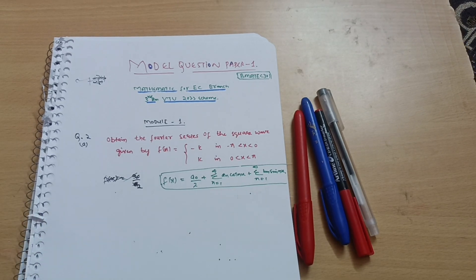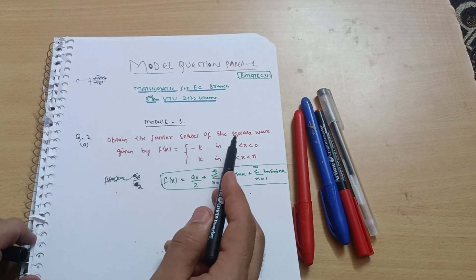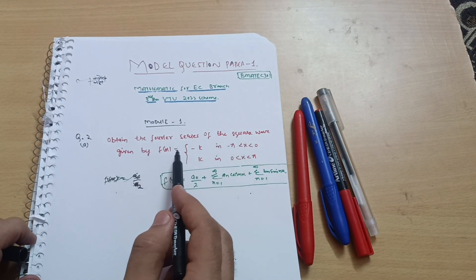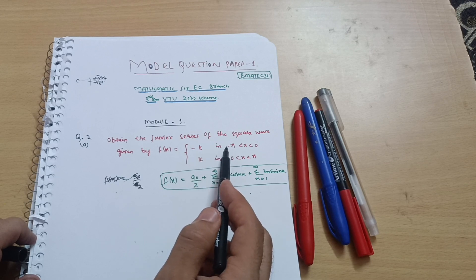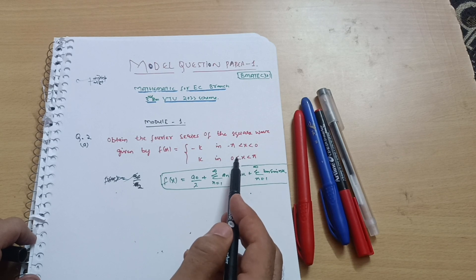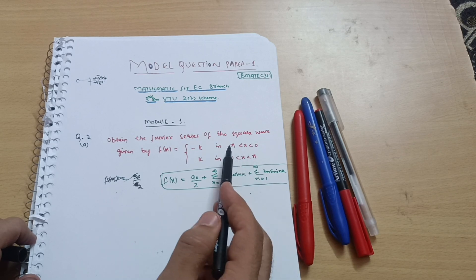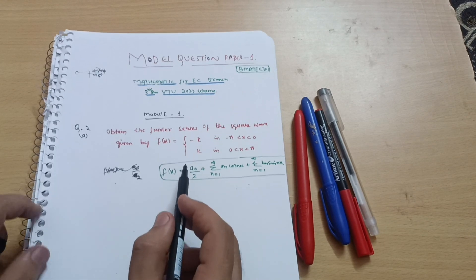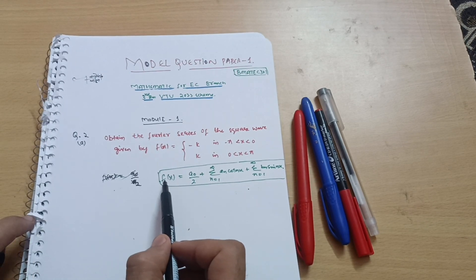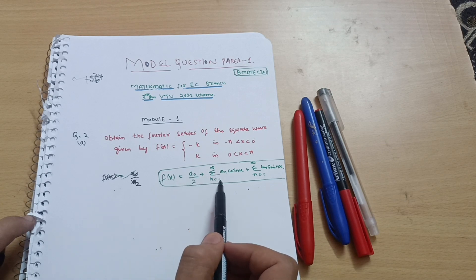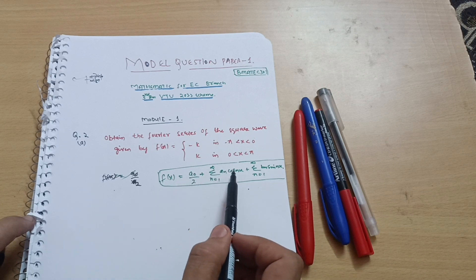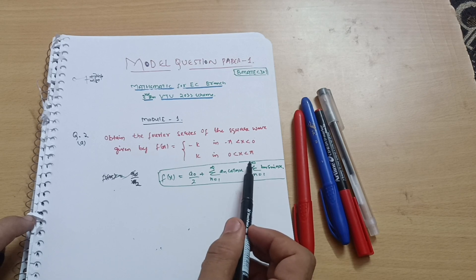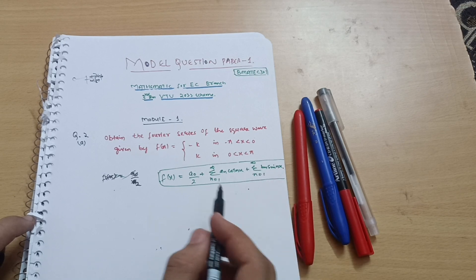Now we will discuss question number 2A from model question paper set 1. The question says: obtain the Fourier series of the square wave given by f(x) = −k for −π < x < 0, and k for 0 < x < π. This is the interval −π to π. The general Fourier series formula is: f(x) = a₀/2 + Σ aₙ cos(nx) + Σ bₙ sin(nx).